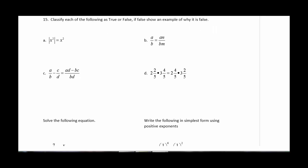I find number 15 to be a rather interesting question for students. The directions say classify each as true or false. If false, show an example of why it's false. What I see a lot from students is they like to find an example where it's true, and then they'll tell me it's true. And they're missing the point. The point is not to prove to me that it's true, the point is to prove to me that it's false.